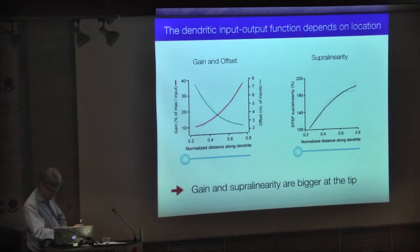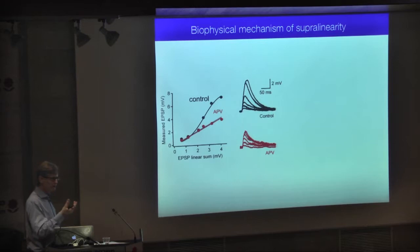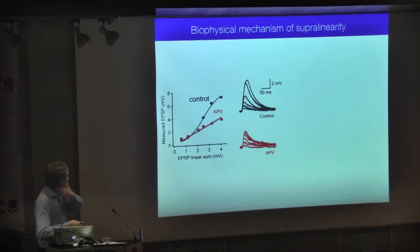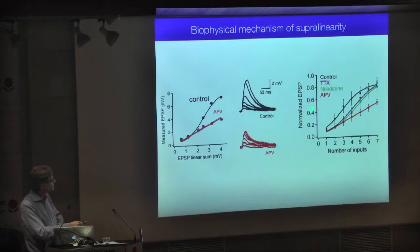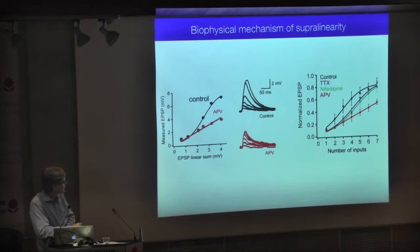The gain of the input-output function depends critically on position along the dendrite, going from a shallow slope at the base to a very steep slope at the tip, accompanied by increasing super-linearity of summation. There is therefore a gradient of integration along each individual dendrite. The mechanism: the NMDA receptor itself is voltage-sensitive due to the voltage-dependent magnesium block. Blocking NMDA receptors with APV linearizes the input-output function, showing that NMDA receptor activation is crucial for this nonlinear curve.